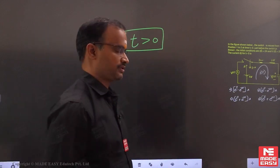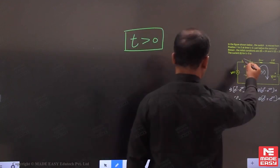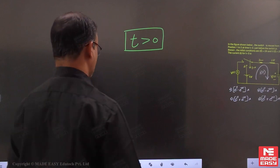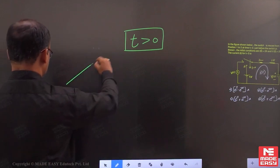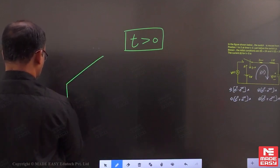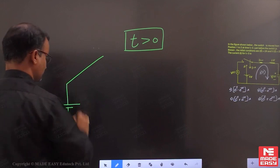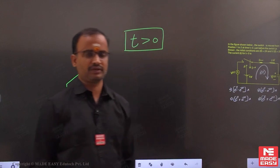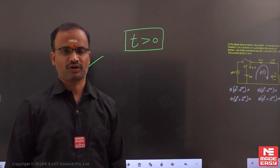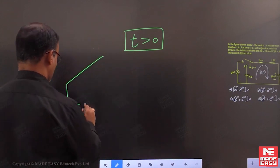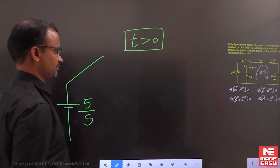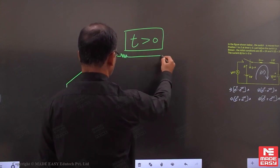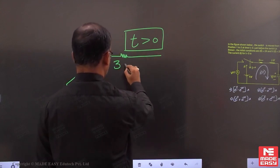For t greater than 0, the switch is transferred from position 1 to position 2. Corresponding to position 2, the source given is 5 volts. If you transform this into the S domain, you get 5 over S. The resistor remains 3 ohms.